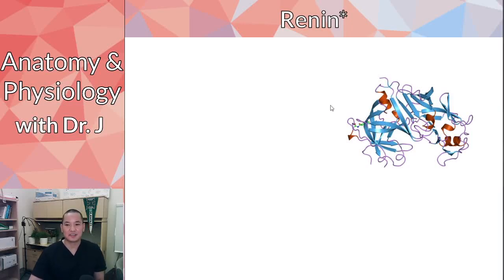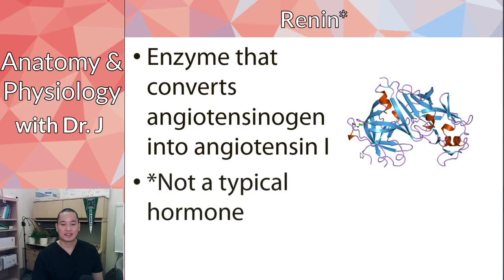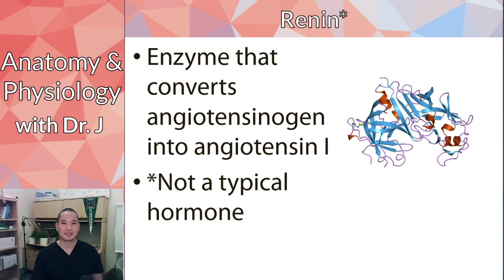Renin is a very interesting protein — it's an enzyme. This is definitely what I want you to know: it's an enzyme that converts a protein called angiotensinogen into angiotensin 1. Now, renin is not a typical hormone. Some textbooks say renin is a hormone, but hormone implies that it binds to a receptor and causes some sort of cellular change.